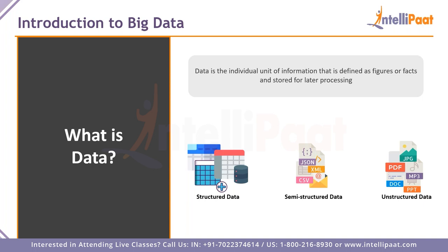Data can be of three types. The first is structured data. If you've dealt with SQL tables or Oracle DB databases — anything SQL-related — data contained in SQL databases is called structured data. It has column names assigned with properly structured values, fixed number of columns, values for every row, and primary keys if needed. You can easily run queries on it.